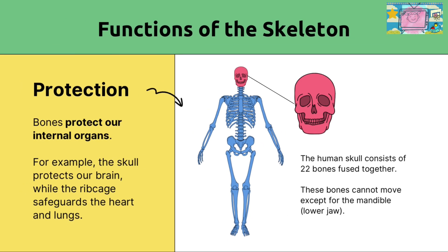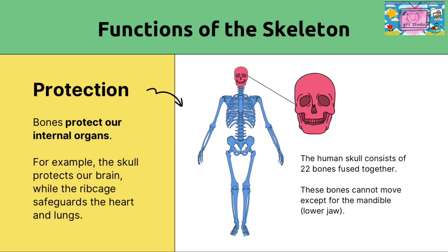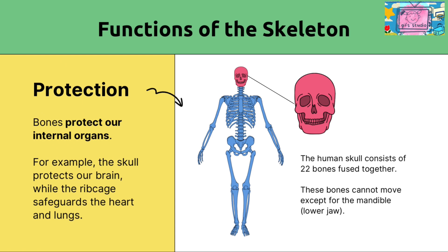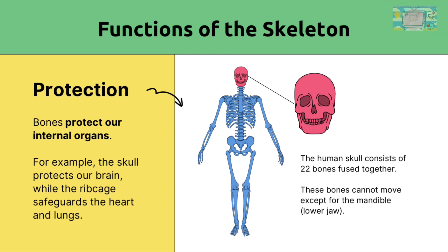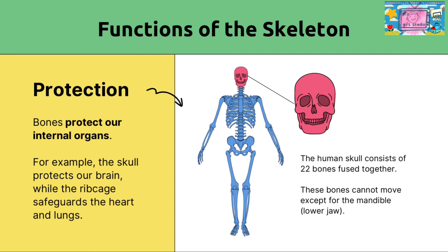Protection: bones protect our internal organs. For example, the skull protects our brain, while the ribcage safeguards the heart and lungs. The human skull consists of 22 bones pieced together. These bones cannot move, except for the mandible, which is the lower jaw.